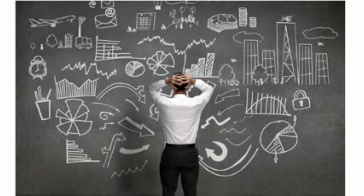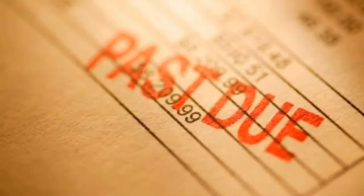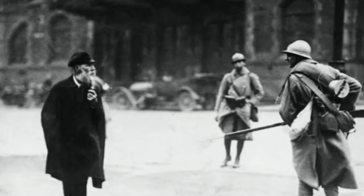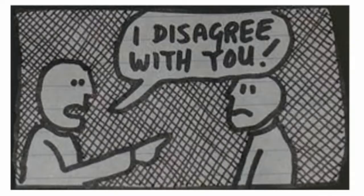Oh dear, my lads and lasses. Looks like we're in an utter dilemma now for Germany, because they haven't been paying their reparations. So that means big old France is going to march into the Ruhr and take their metal. Now Germany can't be having any of this, so they do passive resistance.